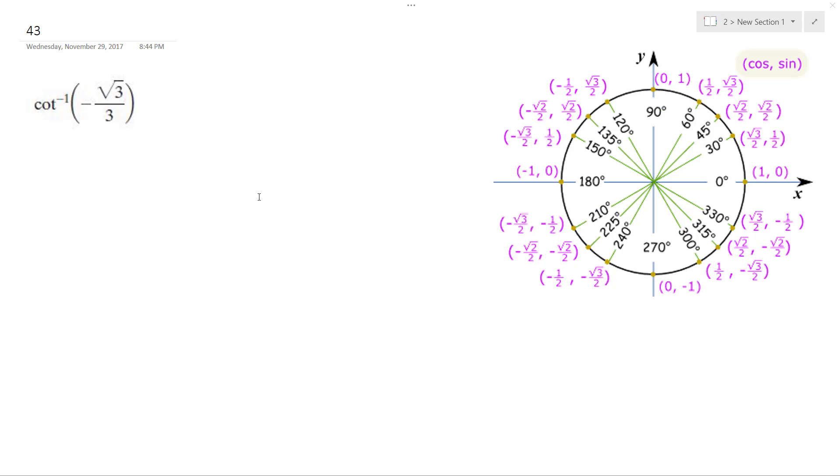Alright, solving this problem. So cotangent is bound between negative pi over 2 and pi over 2.